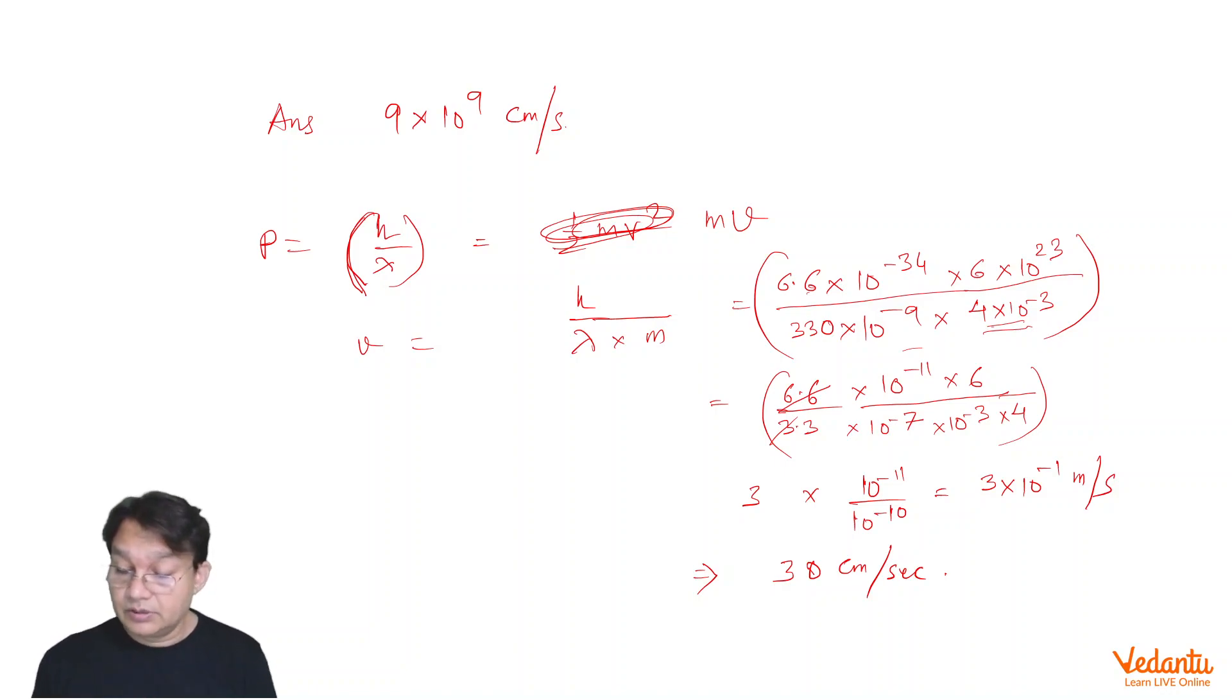We have converted the mass in kilogram first to calculate this velocity in SI unit. In SI unit, we will get the velocity 3 into 10 to the power of 1 meters per second. And when you convert it into centimeters, it is going to be 30 centimeters per second.